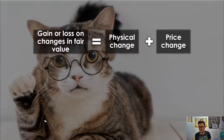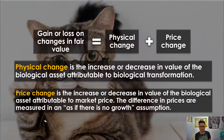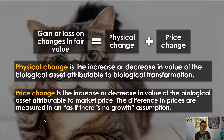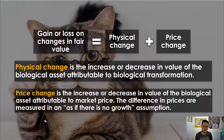The gain or loss on changes in fair value has two elements: the physical element and the price element. Consider this: you bought a newborn piglet on January 1 and took care of it until December 31 — about one year old. Imagine the difference in selling a piglet versus selling a one-year-old pig. The difference in value could be more than 10 times the price depending on the weight. That is physical change — the increase or decrease in value due to biological transformation.